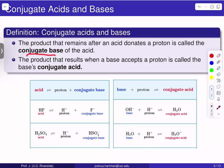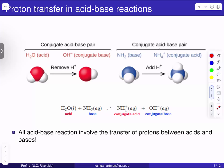We always talk in terms of acids and their conjugate base, or bases and their conjugate acid. As you can see from this example, certain substances — like water — can serve as both a conjugate acid and a base. For now, what I want to focus on is being able to identify and recognize these conjugate acid-base pairs.